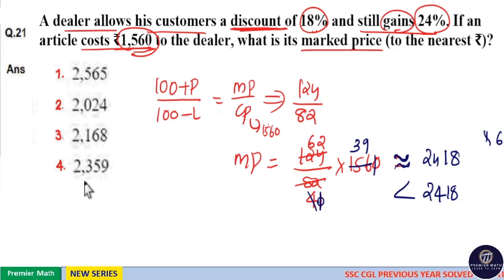Now, if you look at the values, nearly 2400 is option 4. Option 4.